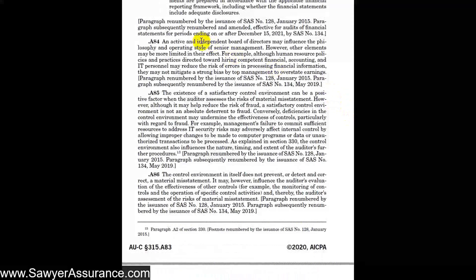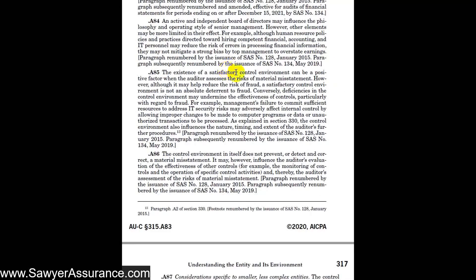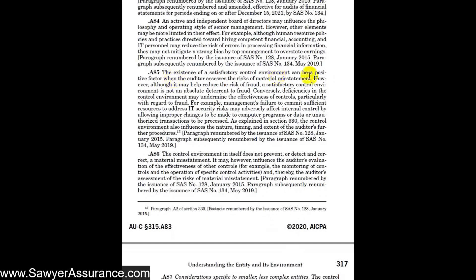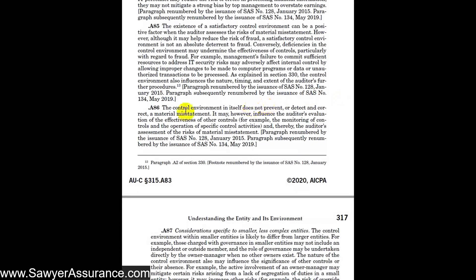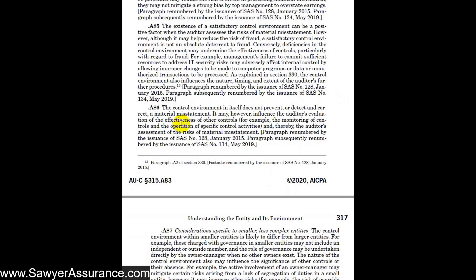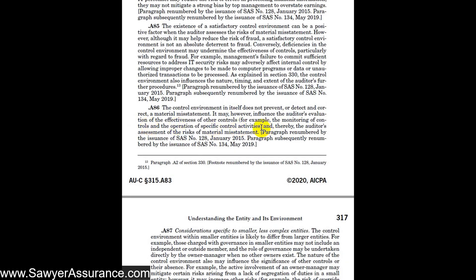The board is certainly important for influencing the philosophy and operating style of senior management. It's also important that human resources sets up policies and practices that make sure the right people are in the right seat. The existence of a satisfactory control environment is a positive factor when assessing the risk of material misstatement. However, it doesn't allow us to let down our guard — a satisfactory control environment is not an absolute deterrent to fraud and does not by itself prevent or detect and correct material misstatements. It does influence our evaluation of the effectiveness of other control components, such as monitoring of controls and specific control activities, which may allow us to reduce our assessed risk of material misstatement. But a good control environment alone does not necessarily mean that everything is operating correctly.